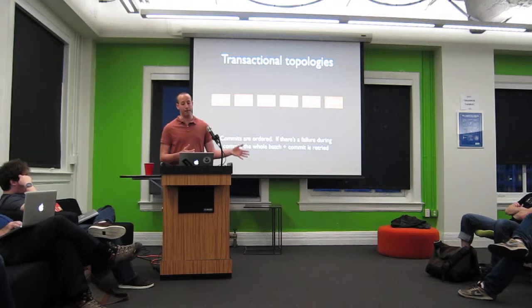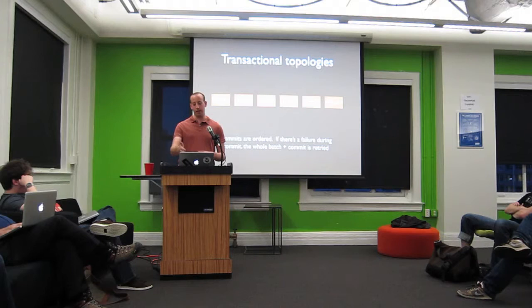For example, let's say you go to commit batch one and that fails — you'll retry the commit. Let's say that succeeds, then you move on to committing batch two. That succeeds, you do batch three and commit that. Then batch four fails commit, you replay it, and so on. So it's strongly ordered but possibly with repeats.